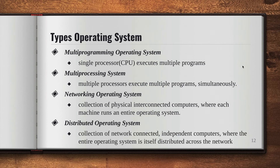In a distributed operating system, the entire operating system is itself distributed across the network. The key difference between the network operating system and the distributed operating system is that in a network OS, each system runs an entire operating system, whereas in a distributed OS, the entire operating system is distributed across the network and each of the independent computers are connected through a network.